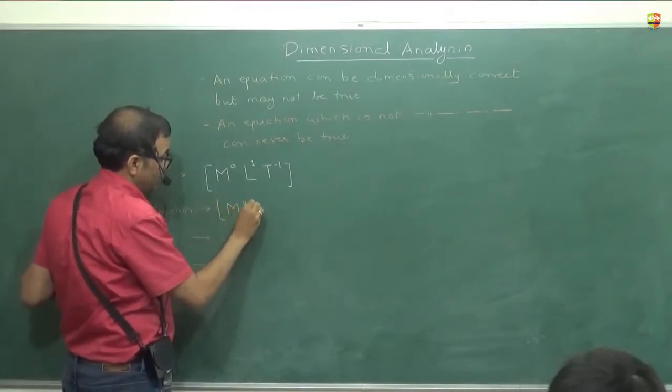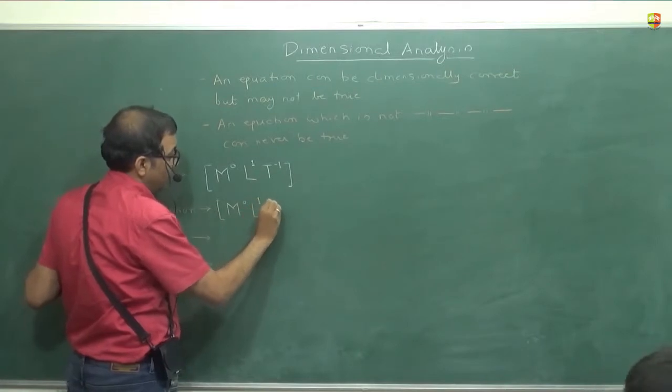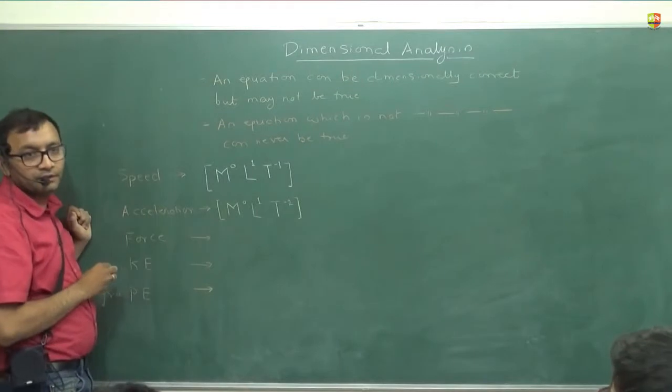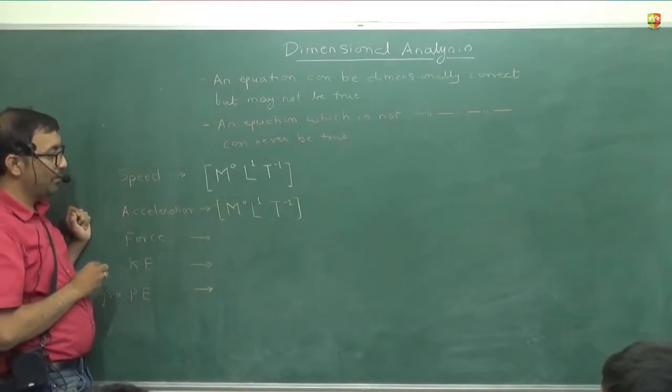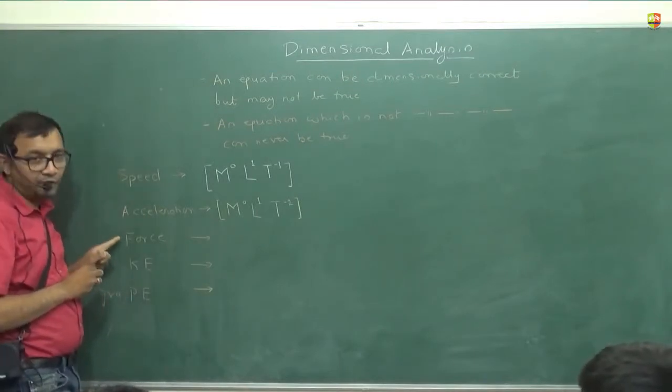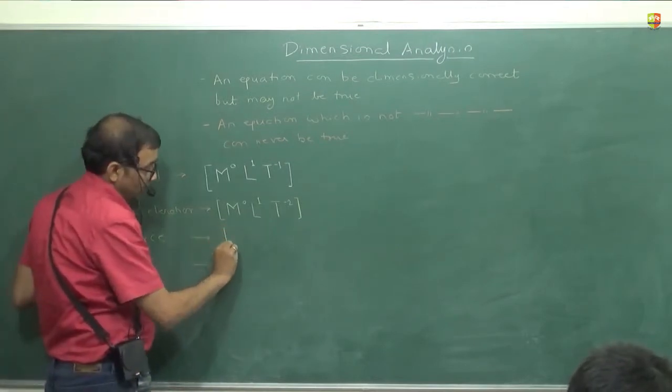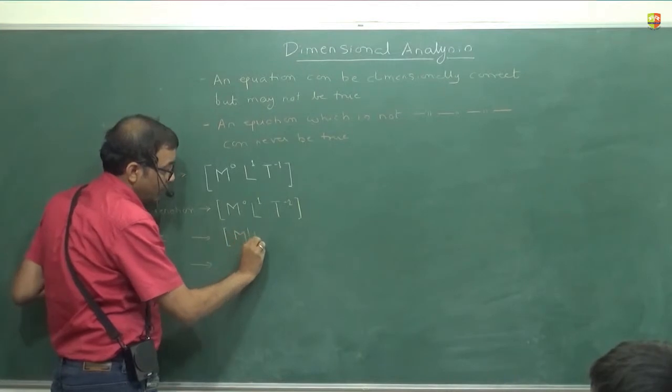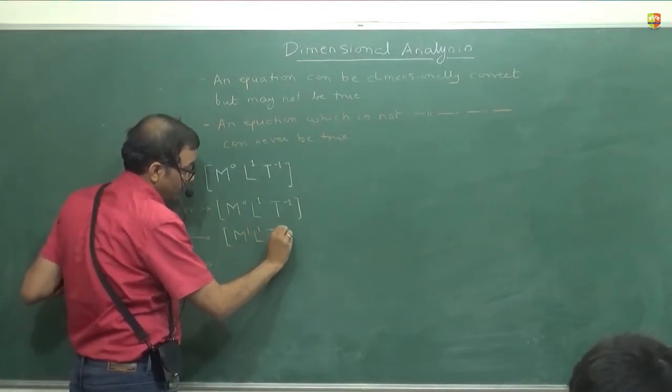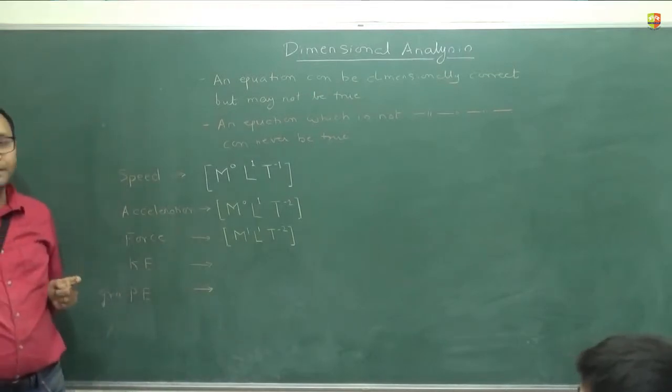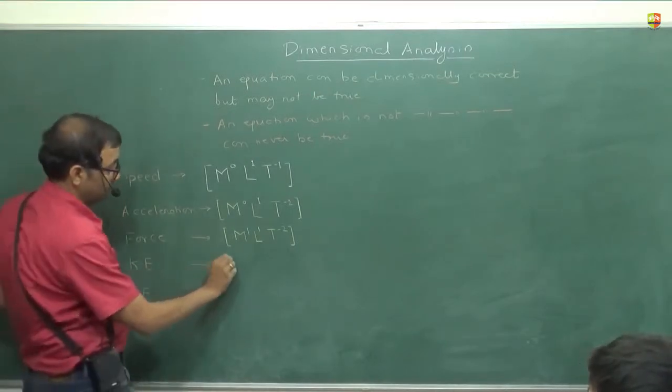Isolation will be what dimension? M, 0, L, 1, T, minus 2. Yes or no? What about force? Dimension of force is? M, 1, L, 1, T, minus 2. Multiply mass with it. It will be M, 1, L, 1, T, minus 2. Kinetic energy is half Mv square. M, 1, L, 2, T, minus 2. M, 1, L, 2, T, minus 2.